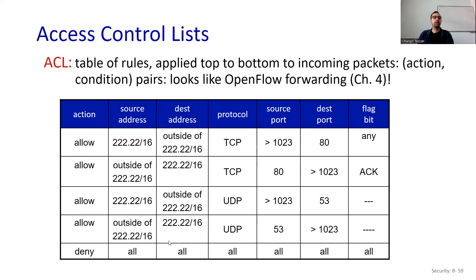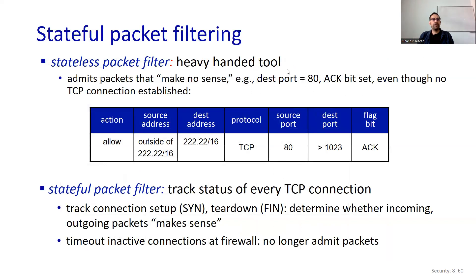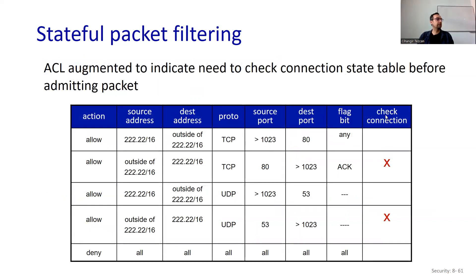The general aim is to close every port, but when someone needs an application requiring a specific port, you open that port for that IP address only. Stateless packet filtering is a heavy-handed tool — it admits packets that make no sense, such as destination port 80 with ACK set even though no TCP connection was established. For this reason, you might prefer a stateful packet filter, which tracks the status of every TCP connection — tracking connection setup, teardown, and determining whether incoming or outgoing packets make sense. Inactive connections are timed out. The ACL is augmented with a column to check the connection state table before admitting packets.